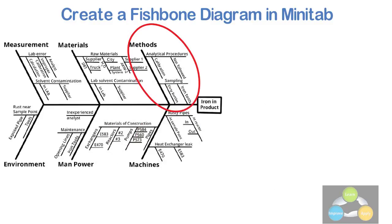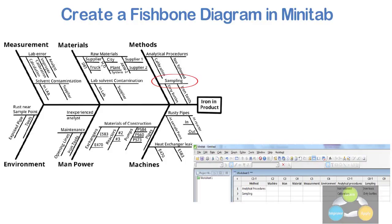We can see in the cause and effect diagram under methods, there are two major causes: analytical procedure and sampling. So I have written it under the method column. In analytical procedure, there are two sub-causes: not followed and calibration. I have entered a new column by the name analytical procedure as major cause and listed sub-causes under it. Similar thing I have done for another major cause, sampling.